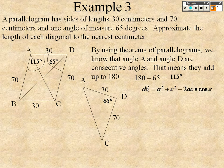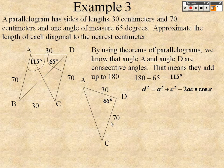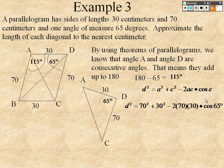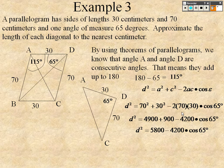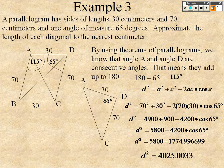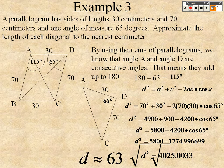So, it's D squared equals A squared plus C squared minus 2AC times cosines of the angle. So, that's 70 squared plus 30 squared minus 2 times 70 times 30 times cosines of 65. And when you keep plugging all that in and simplifying, you get D squared equals 4025.0033. So, you square root to find out that D is approximately 63. So, that's one diagonal. This diagonal is 63.